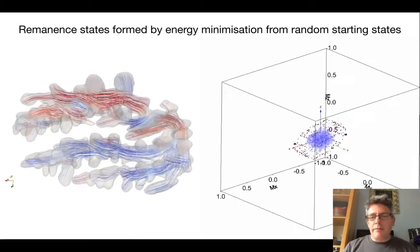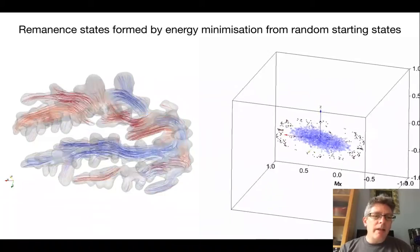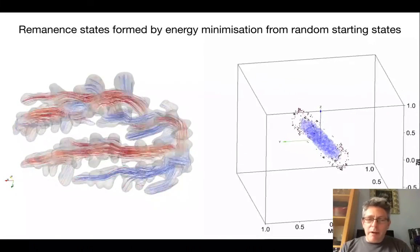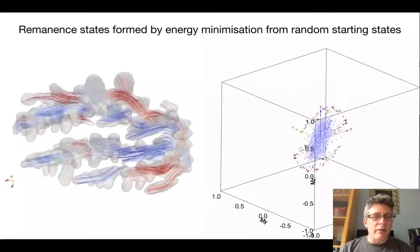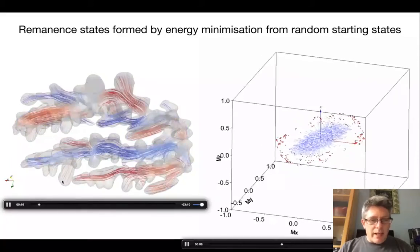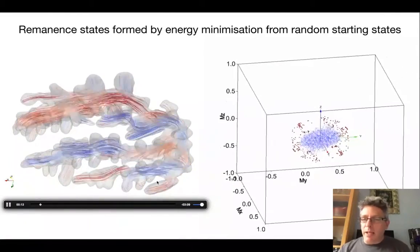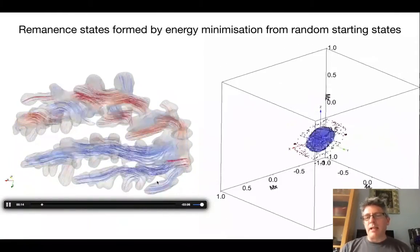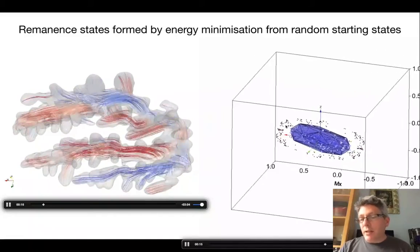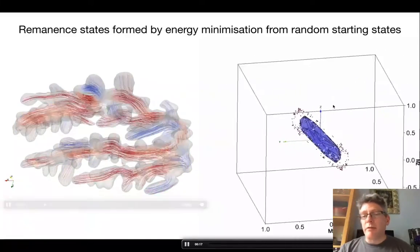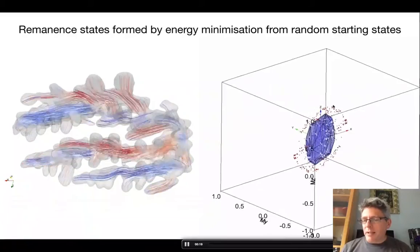To get a sense of this complex energy landscape, we start by looking at the remanent states available to a given particle. These are performed from a random starting point, performing an energy minimization using micromagnetics, and then plotting out the remanent vectors that result from that. That defines a cloud in magnetization space.